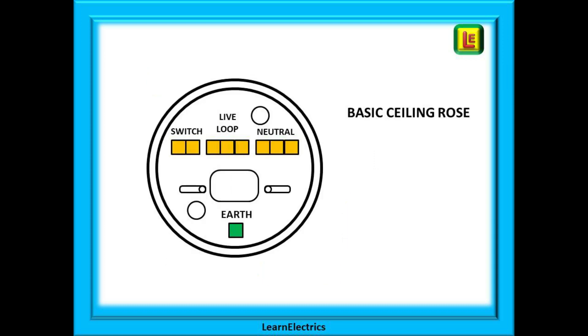Let us move on now and see where we connect the wires in the ceiling rose. And here is our basic ceiling rose. The twin and earth loop cable marked L here comes in from the consumer unit. The brown wire goes to any one of the holes in the loop block.